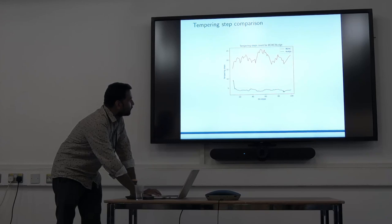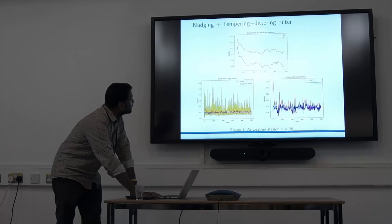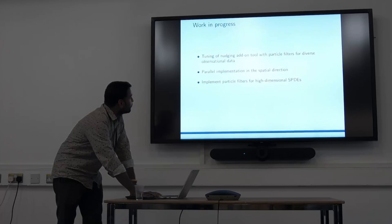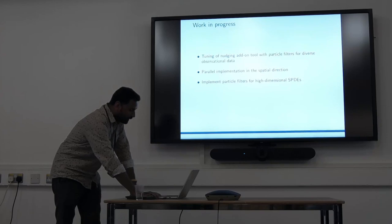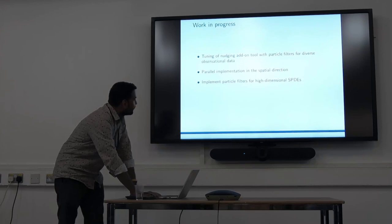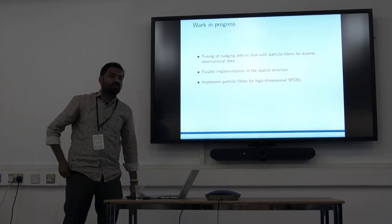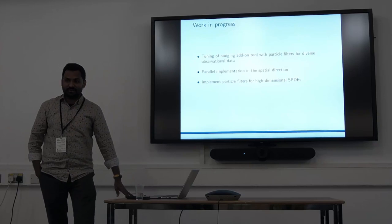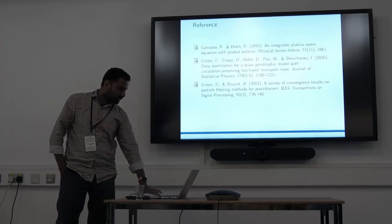The last comparison is that if we do nudging, we don't need too many tempering steps. After some time we need like four or five steps, whereas here we need around 20 steps. With nudging we should be better because we're doing more. This is work in progress. We still have to tune the nudging for diverse observation data and implement parallelization for spatial direction. The last one is for higher-dimensional SPDEs.